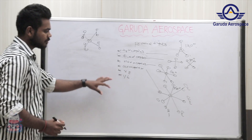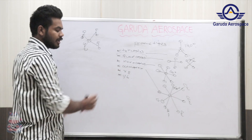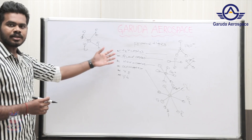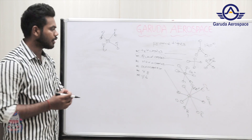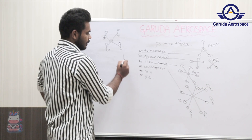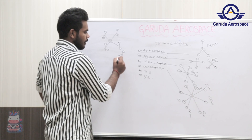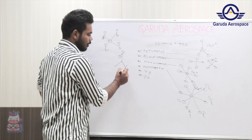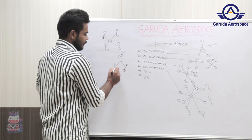A similar thing is the Y6. Y6 is nothing but an advanced model of the tricopter. It will also be looking like a Y, with one motor connected at the front and one motor connected at the back of each arm.